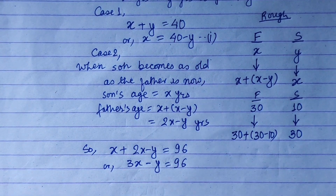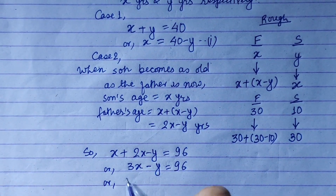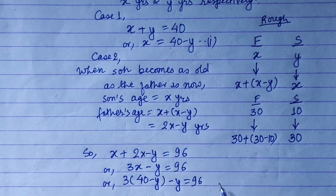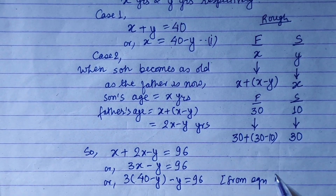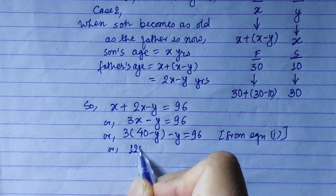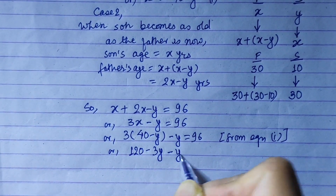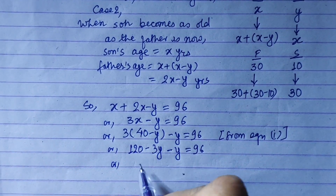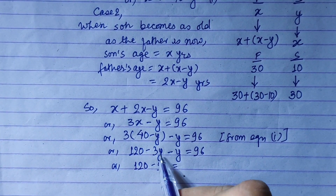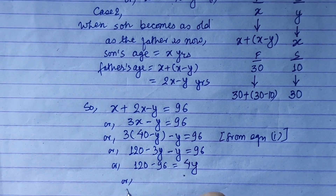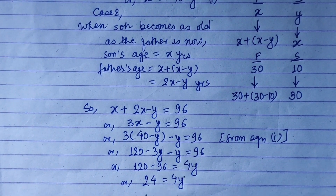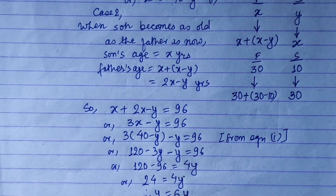Now we will replace — from equation 1 — x value is 40 minus y. So: 3 bracket (40 minus y) minus y is equal to 96. Solving: 120 minus 3y minus y is equal to 96. Rearranging: 120 minus 96 is equal to 3y plus y, so 4y is equal to 24.